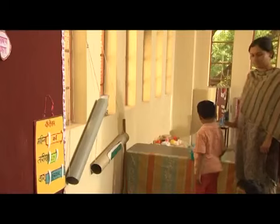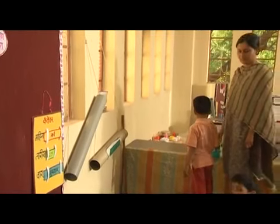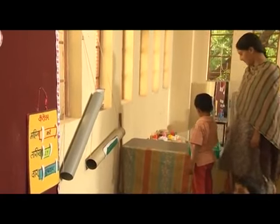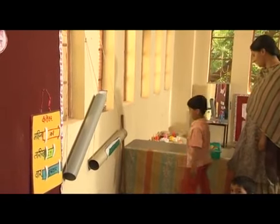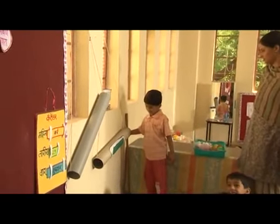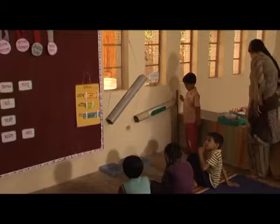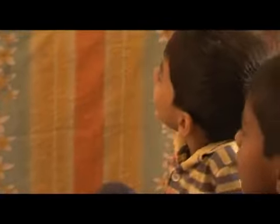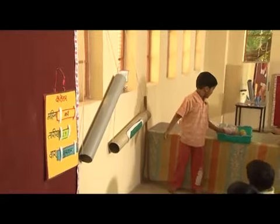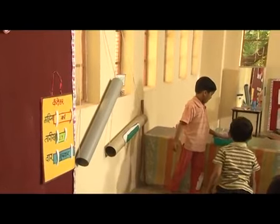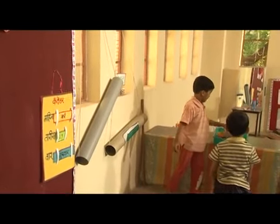Each one of you will get a chance to try out five objects. During this lesson the children are actively involved — they get a chance to try, observe, and make sense of what they see. Try something else; try putting a block in.